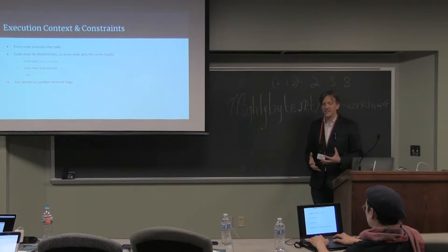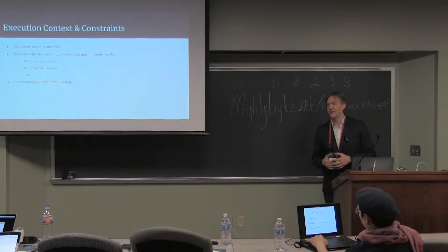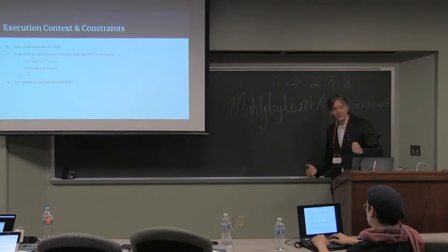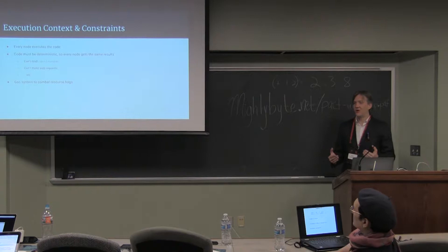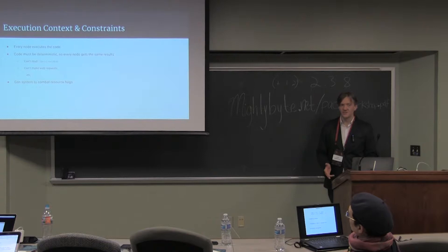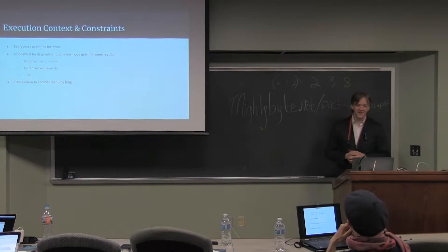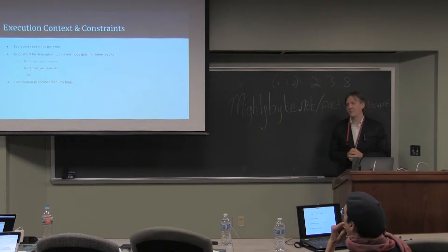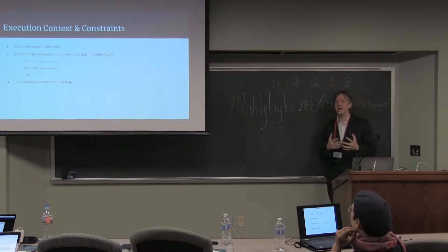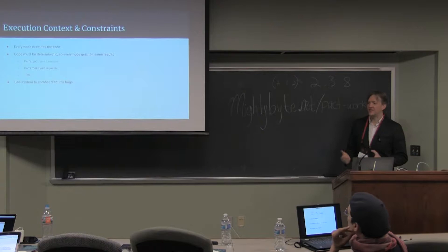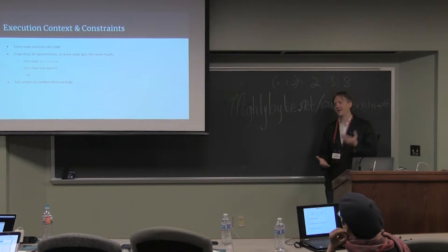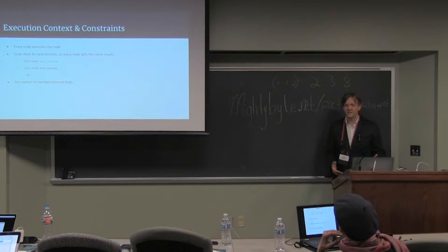These previous characteristics of blockchains lead to some constraints on our programs — a unique execution context. Every node executes the code, which means the code must be deterministic. Every node in the network needs to get the same results when they execute the same program with the same inputs. That means you can't read from dev random, you can't make web requests because you don't know what's going to come back.